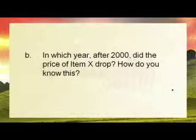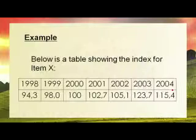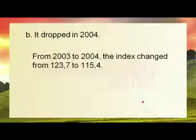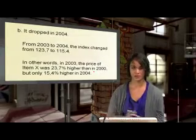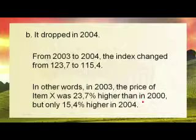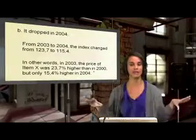Question B: in which year after 2000 did the price of item X drop? Looking at the table: 2000 is 100, 2001 is 102 (increase), 2002 is 105 (increase), 2003 is 123.7 (increase), then 2004 is 115.4 - a drop. We know this because the index went from 123.7% in 2003 to 115.4% in 2004. In 2003 the price was 23.7% higher than in 2000, but only 15.4% higher in 2004, relative to our base of 100.